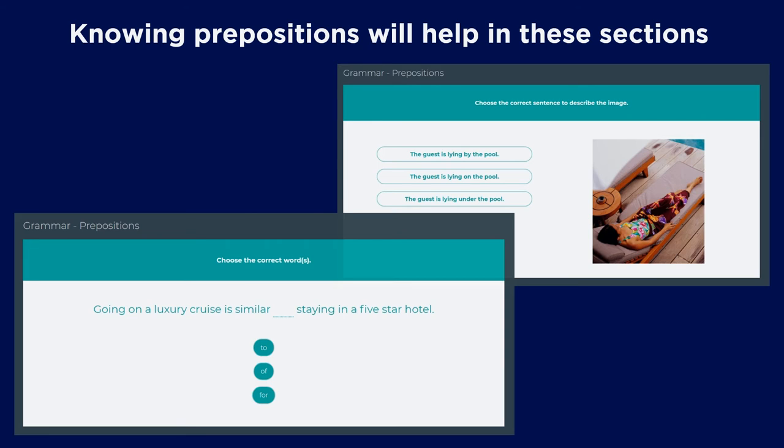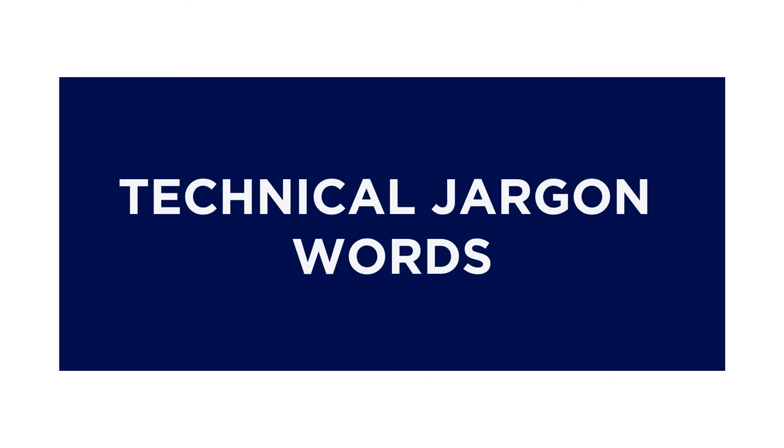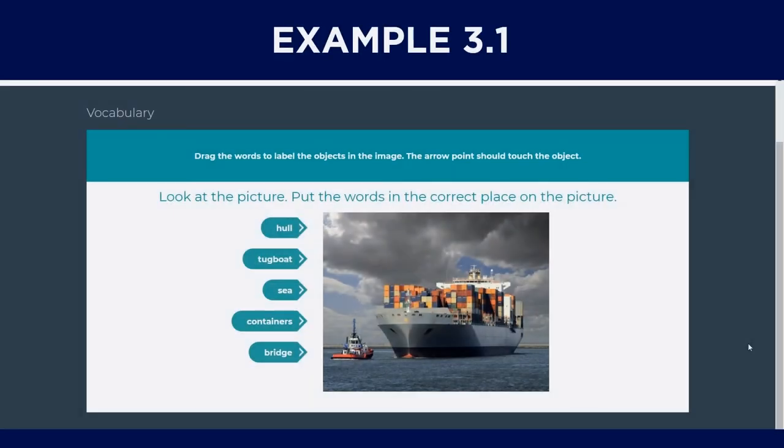Okay, so for the second part of the preparation, you will need to know the technical jargon words. This just means that you have to know the words or lingo of the industry that you want to work in. For example, if you are taking the test for seafarers, then it is good to know words like bridge, tugboats, containers, hulls, and more. Even if it is not directly related to the job position that you are applying for, it is good to know the terms as an industry as a whole.